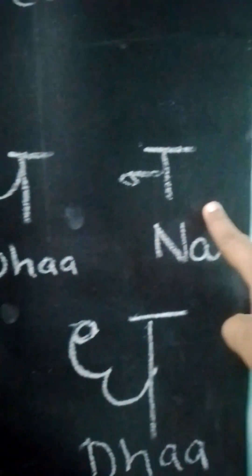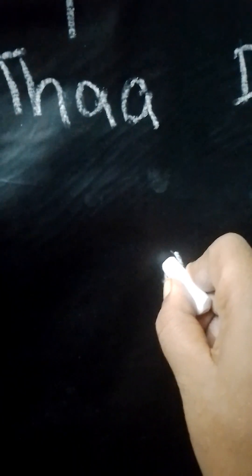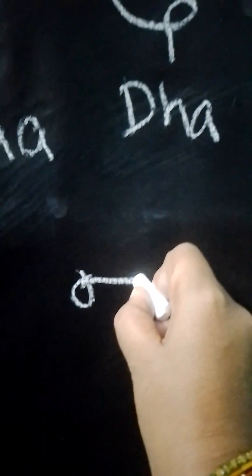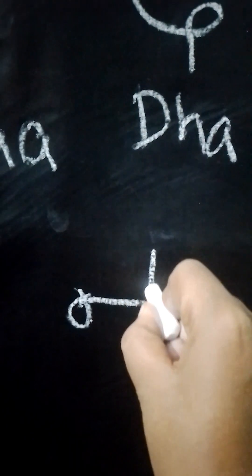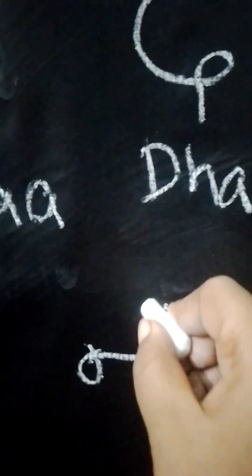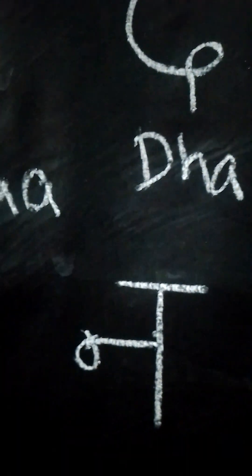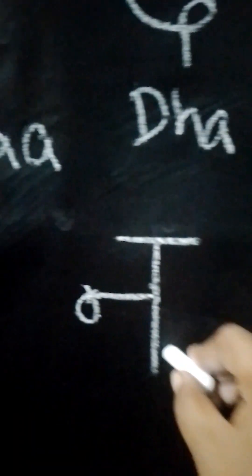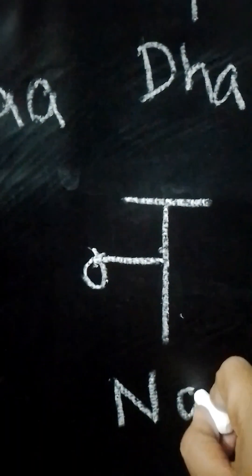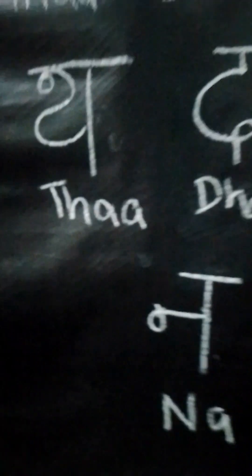Now the fifth alphabet, Na. For Na, first write a circle extending with a sleeping line, then a standing line. At the top, draw a sleeping line. This alphabet is known as Na in Hindi.